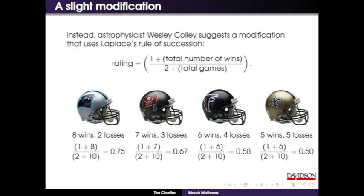We want quality of wins in our method. So we're going to use the method of Wesley Colley. He was an astrophysicist and he used something called Laplace's rule of succession. Initially it looks like an extremely simple change: all you do is take winning percentage and add one to the numerator and two to the denominator. Let's just go with it and see what it does for us.